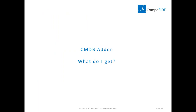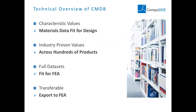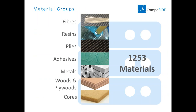So what do you really get when you buy the CMDB add-on? You get characteristic values — material data fit for design — so you can start analyzing your ideas straight away. They're industry-proven values across hundreds of projects in marine, wind, tidal, and aerospace. They're full data sets fit for FEA, and transferable — exportable straight into whichever FEA software you're using. The material groups include fibers, resins, plies, adhesives, metals, woods, plywoods, and cores — 1,253 materials in total, from different manufacturing types and different combinations of fibers and resins.